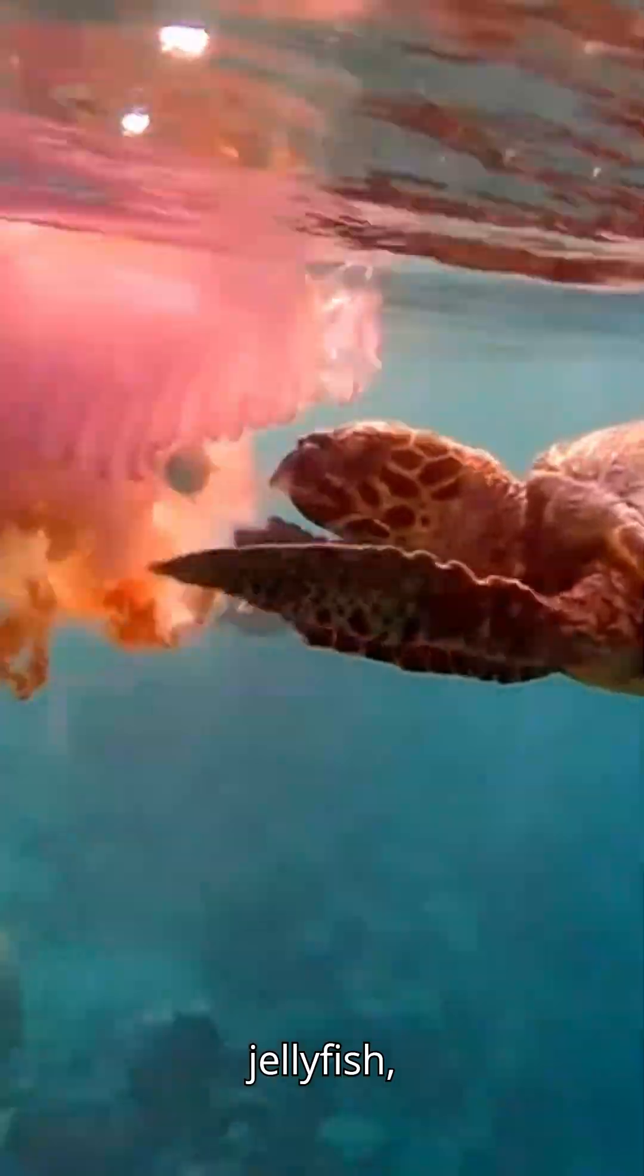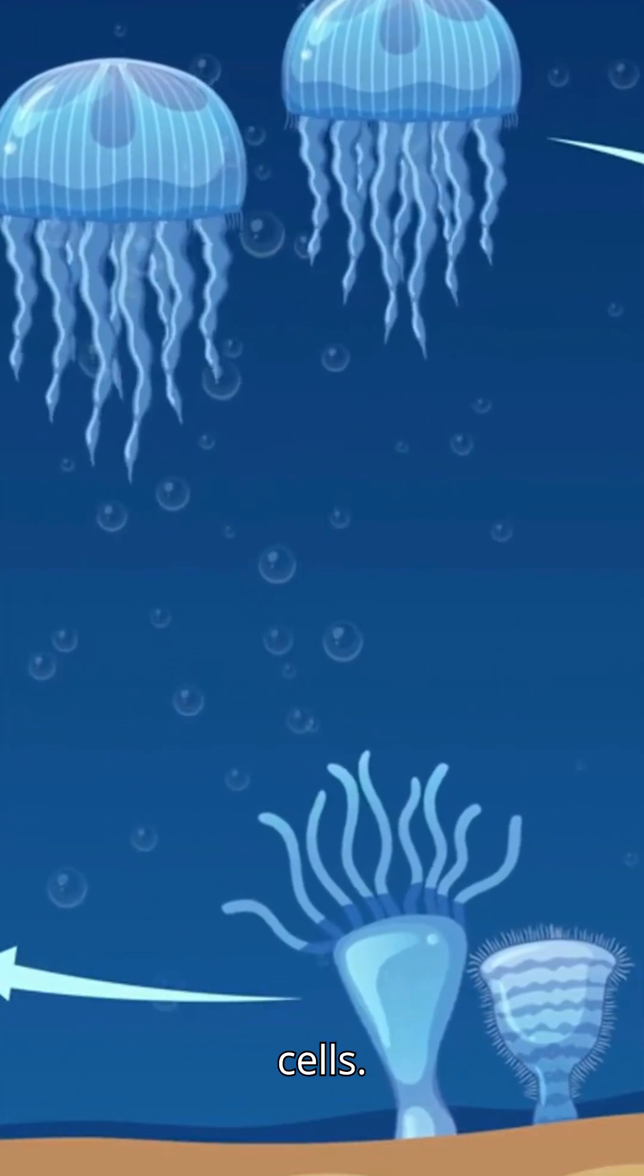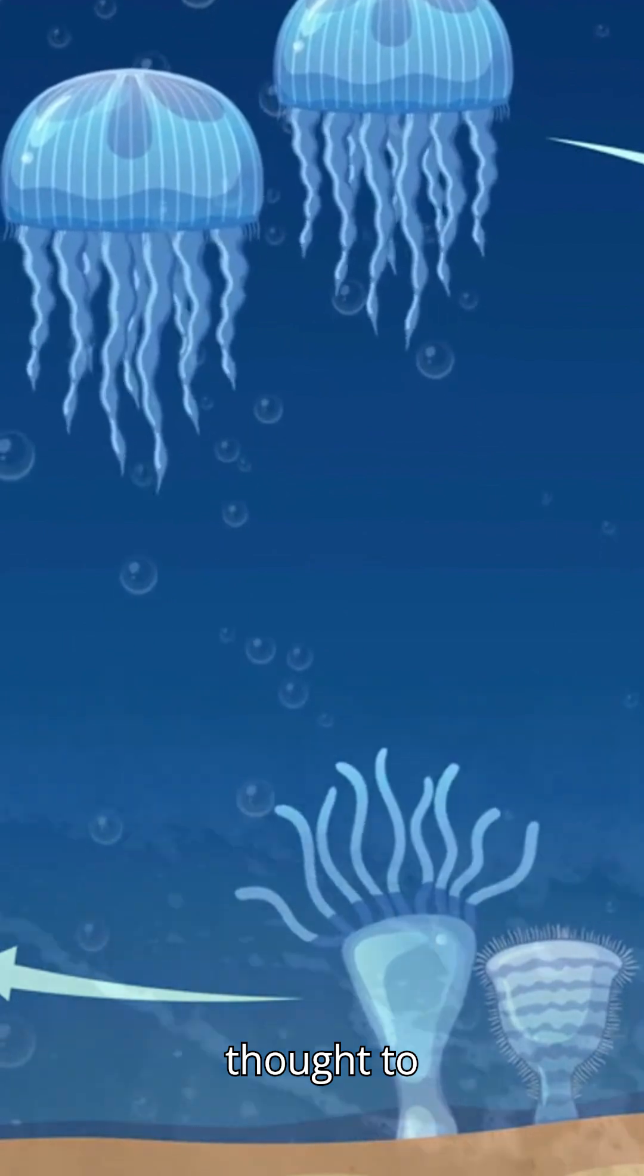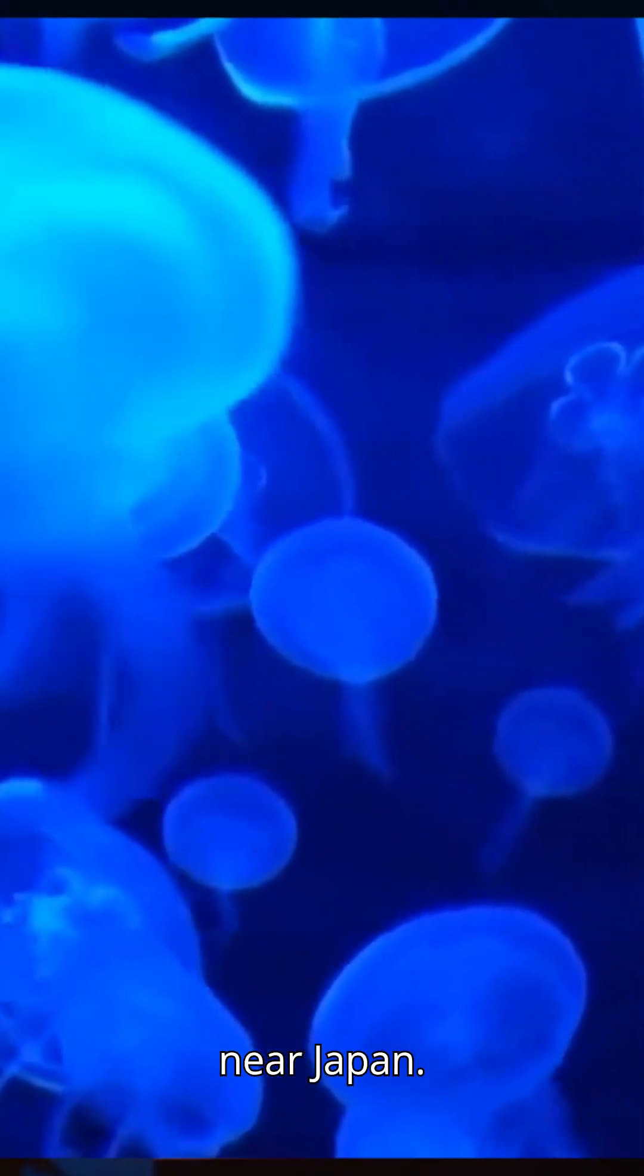The immortal jellyfish, known as Turritopsis dohrnii, has the power to reverse age by regrowing its cells. Originally thought to come from the Mediterranean Sea, it's now been found around the world, from Panama to Florida's Indian River Lagoon, even near Japan.